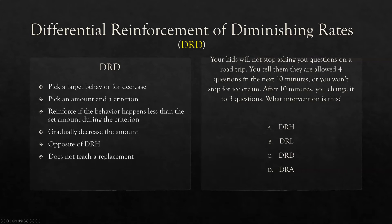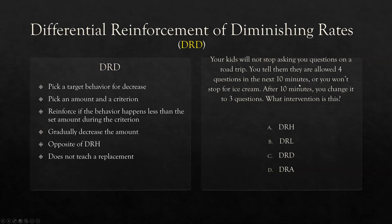Question: your kids will not stop asking you questions on a road trip. You tell them they are allowed four questions in the next 10 minutes or you won't stop for ice cream. After 10 minutes, you change it to three questions. What intervention is this? Clearly DRD. We want to start decreasing our amount — four questions, criterion 10 minutes; next, three questions, 10 minutes. We're reinforcing anytime the behavior happens less, and withholding reinforcement if they exceed the amount. Differential reinforcement of diminishing rates.